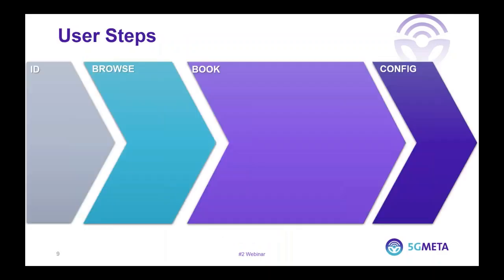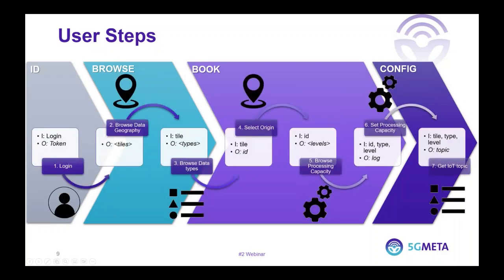Let's see how we use these APIs step by step. First, we get an ID. Once we have this ID, we browse available locations and data types managed by the 5G Meta platform. Then we book a set of assets that will process the data samples before we as a third party can access them. Finally, we configure a data query to get an IoT topic. Once we have it, we can use it to read or write data.